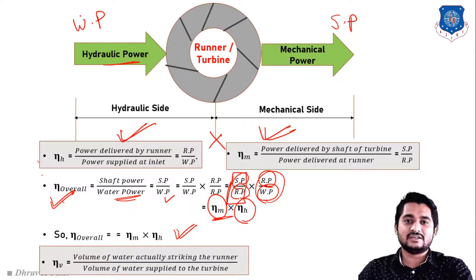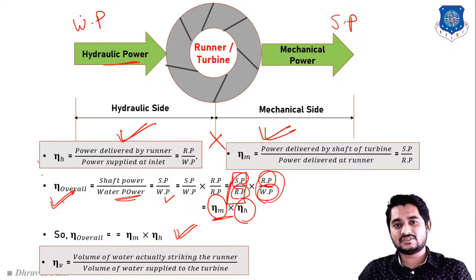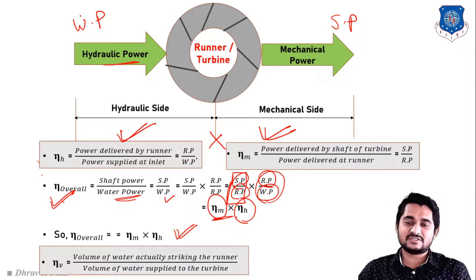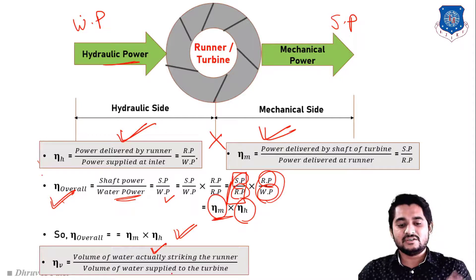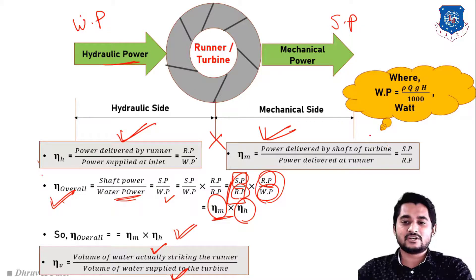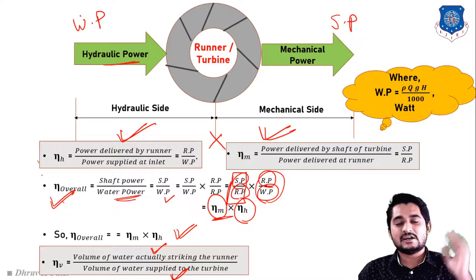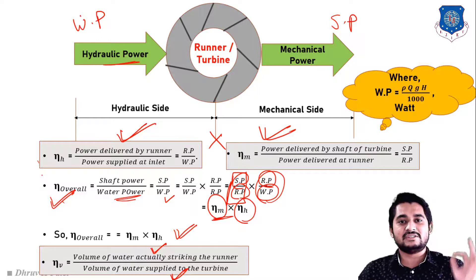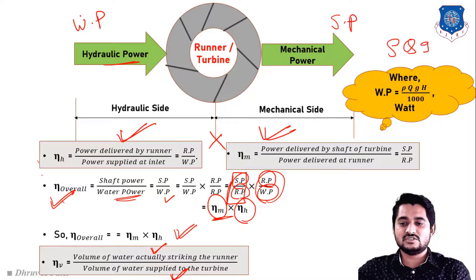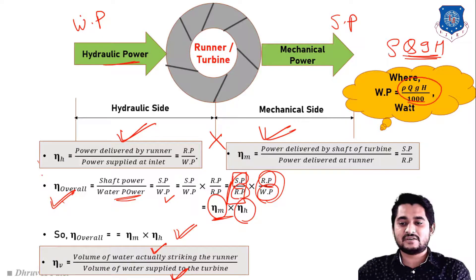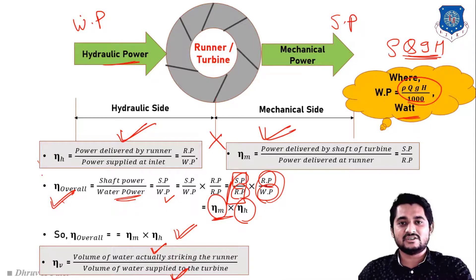Volumetric efficiency is a practical concept: it equals the volume of water actually striking the runner divided by the volume of water supplied to the turbine. Also remember: water power in a hydroelectric power plant equals ρQgH / 1000, giving water power in watts.